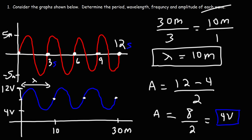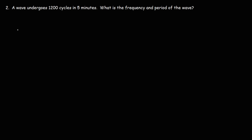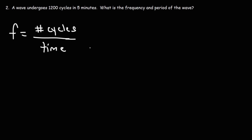Now you know how to calculate the period, wavelength, frequency, and amplitude of a wave. Next problem: a wave undergoes 1200 cycles in 5 minutes — what is the frequency and period? The frequency is the number of cycles divided by time. We need to convert 5 minutes into seconds: 5 times 60 equals 300 seconds.